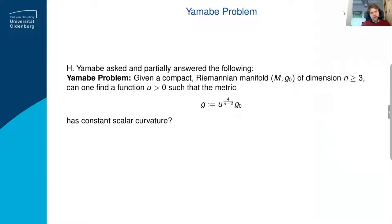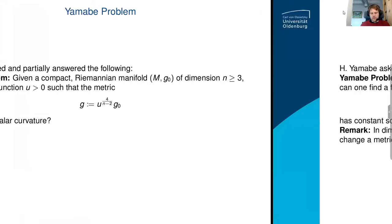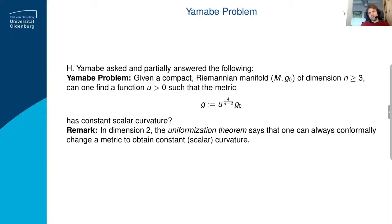Yamabe's question can be formulated as follows: if you have a compact Riemannian manifold of dimension at least three, can one find a conformal rescaling of the metric so that it has constant scalar curvature? In other words, can you find a positive function such that the conformally rescaled metric has constant scalar curvature? In dimension two, this is known as one formulation of the uniformization theorem. The answer to the Yamabe problem is yes — it can always be done.